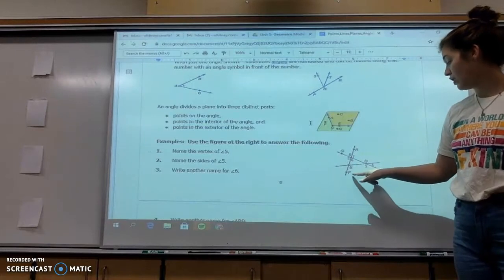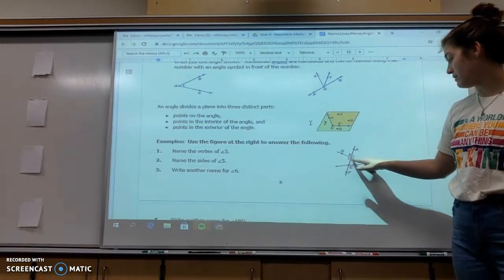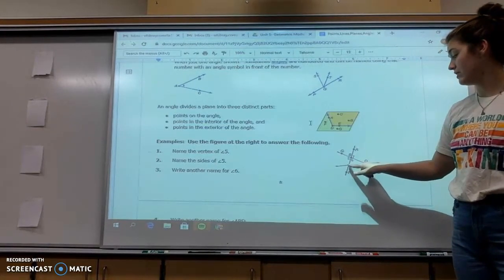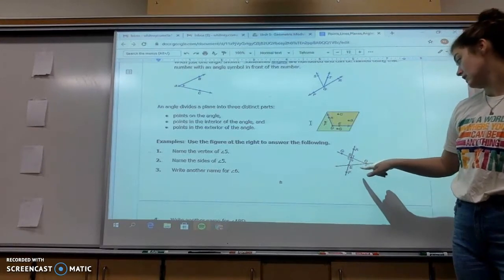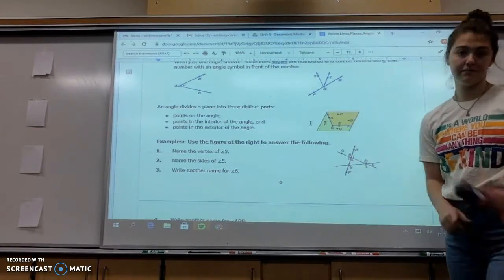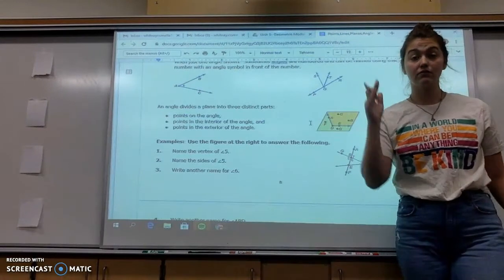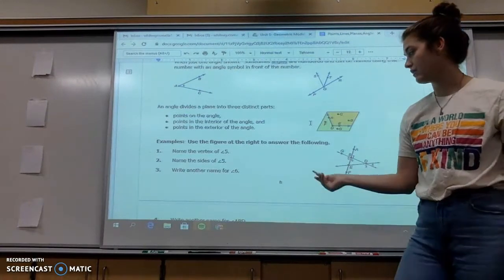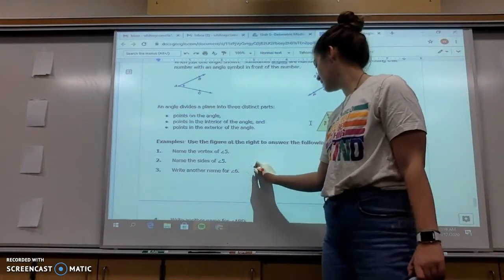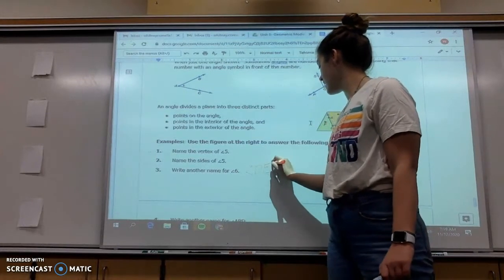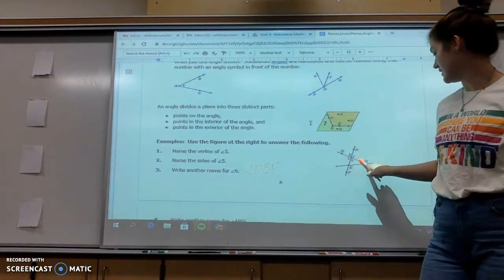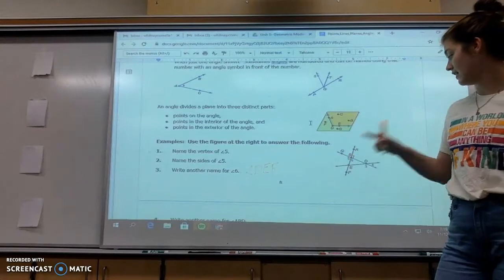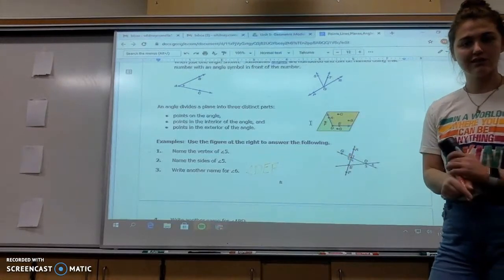And then write another name for angle six. Angle six is right here. We could go FBE or EBF. It doesn't matter, as long as your vertex is in the middle. So another name for angle six would be like DEF. Straightforward. Good job.